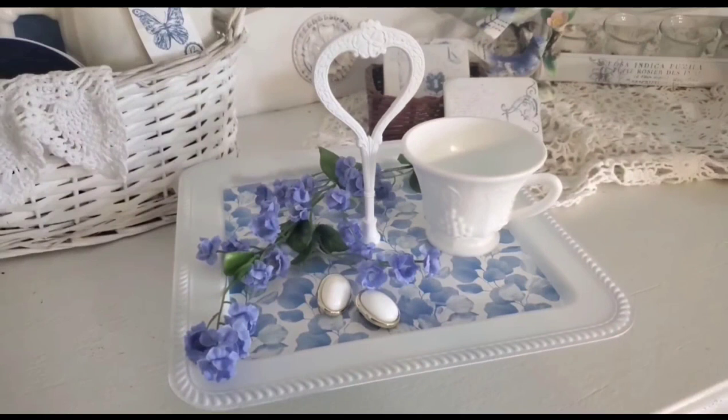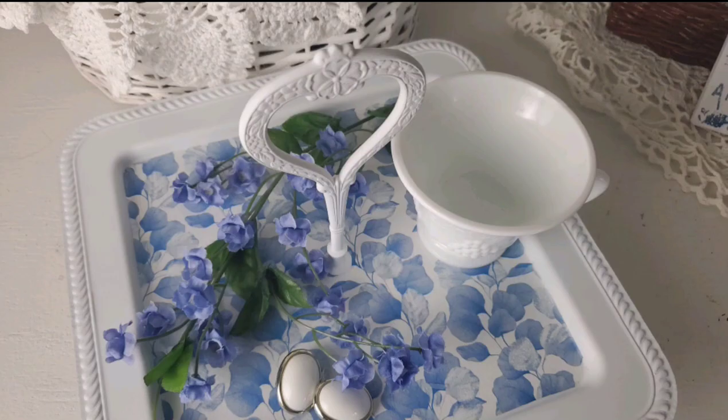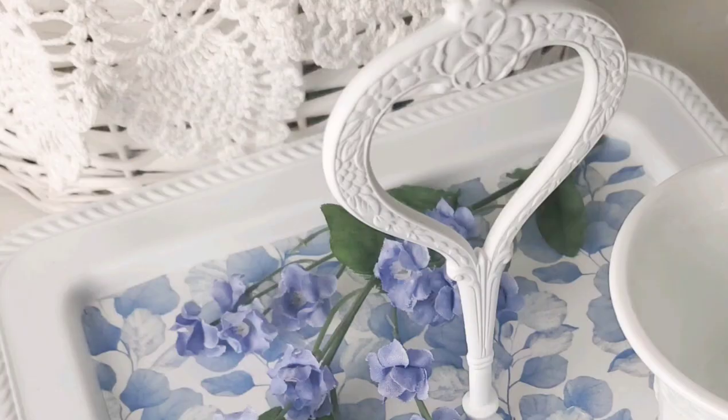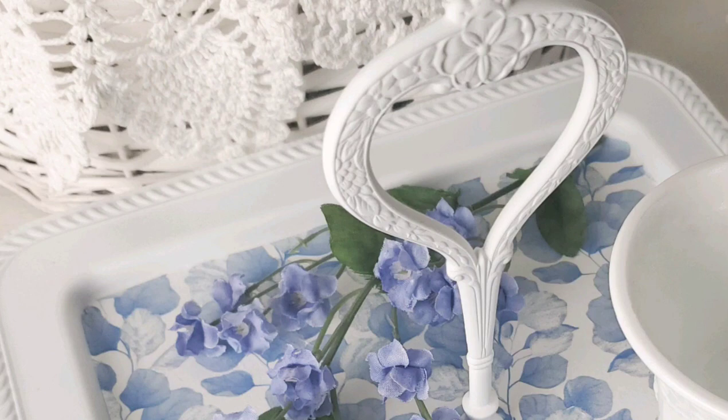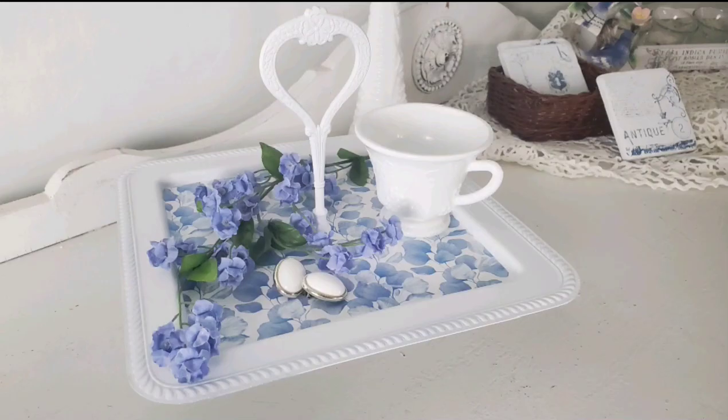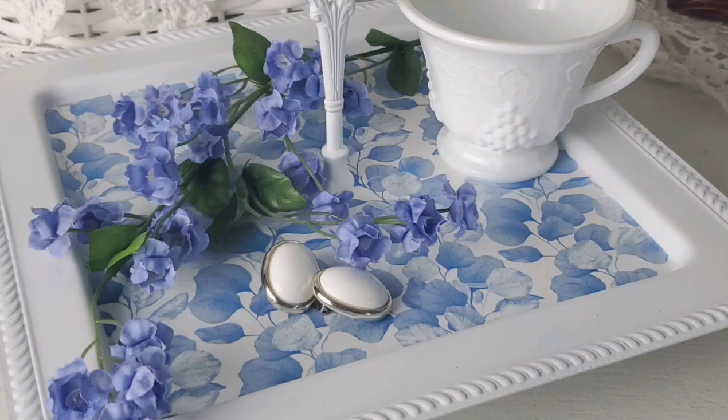I applied two coats of the Rust-Oleum spray paint in a matte white. Found a pretty print over on Canva using their pro version, and then I copied and pasted until I could get the print all lined up. I applied it with a thin coat of Mod Podge. I applied two coats of the Rust-Oleum spray sealer all over the entire piece.